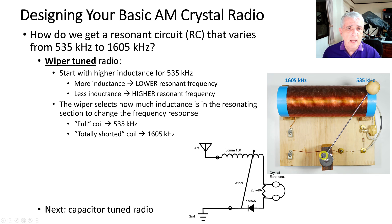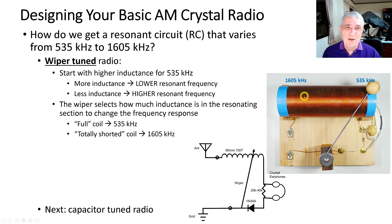As the wiper moves toward the antenna end, there's less and less coil in the circuit, so less inductance means higher frequency. This is counterintuitive — it seems backward — so I had to get out my transistor radio and actually check that this end is the low-frequency end and the other is the high end.